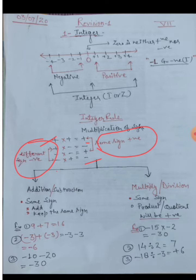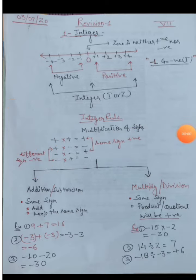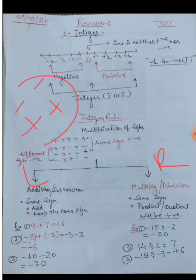For addition and subtraction: when the signs are the same, we add the numbers. If both signs are plus or both are minus, we simply add the numbers and keep the same sign in the answer. For example, nine plus seven equals sixteen. Same sign, add the numbers, keep the sign.